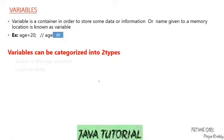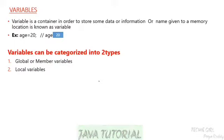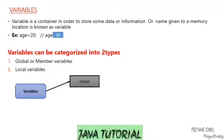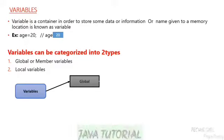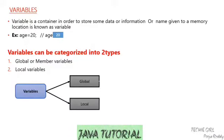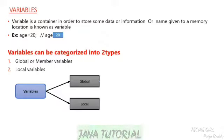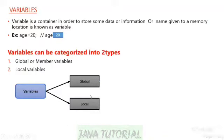Now let's see the types of variables. We have two types: one is a global variable, which is also called a member variable, and another is a local variable. Global variables can be accessed throughout the program. Local variables are declared inside a method and can only be accessed within the scope of that method.